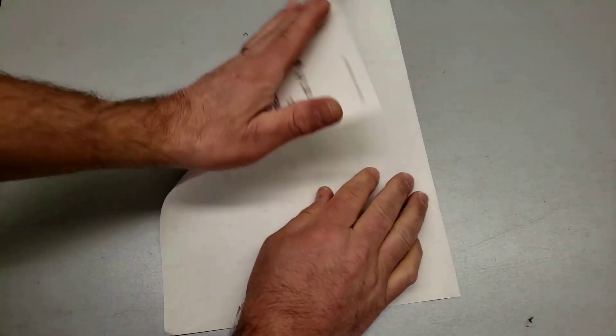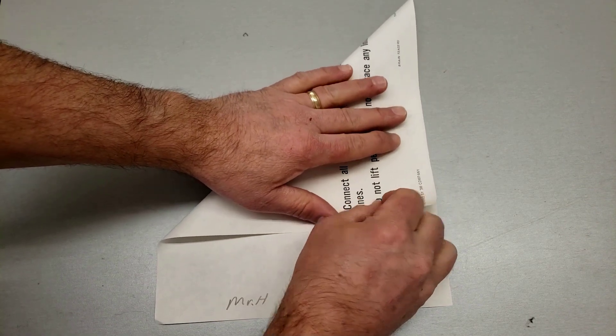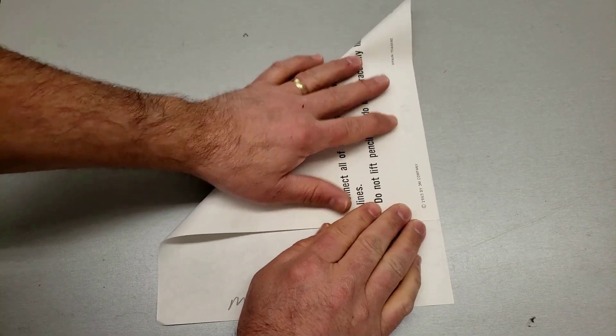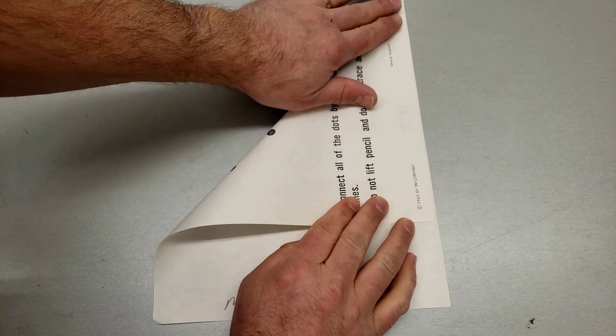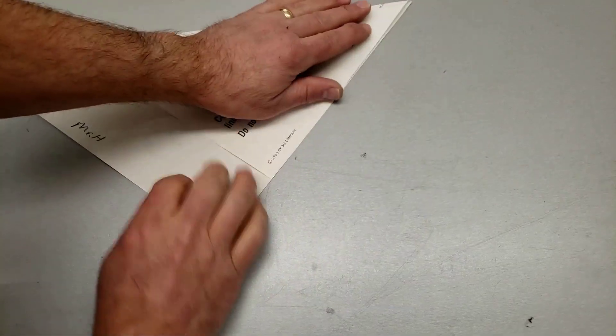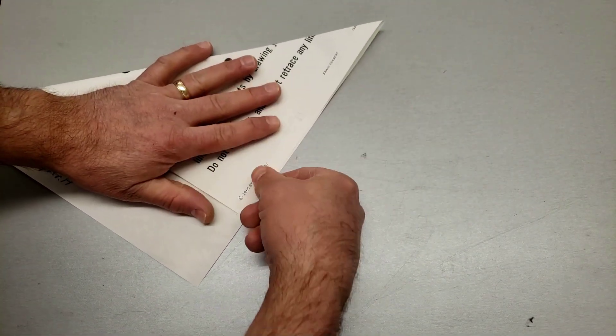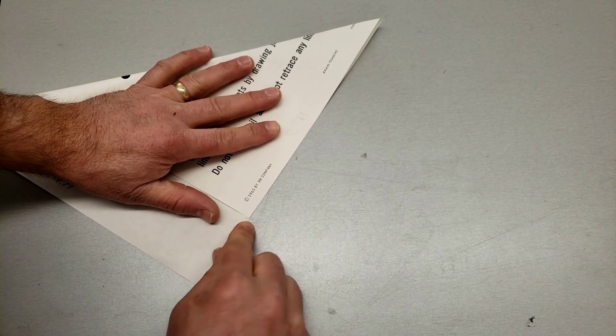We're gonna go from this corner to this side. Always make sure you crease them as straight as you can. I'm gonna make sure that point's pretty sharp up there because every fold from the beginning to the end, the more accurate you make it the better your plane is gonna be.